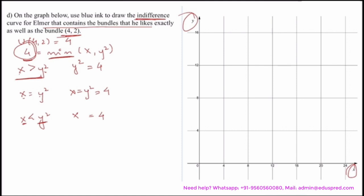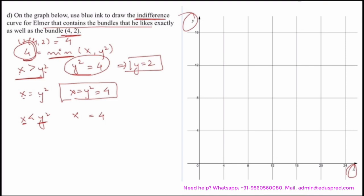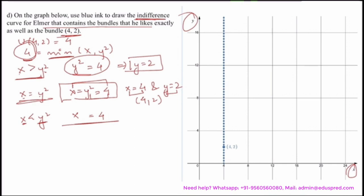Note a very important thing: you cannot just plot y squared equals 4 as a parabola. You have to simplify — y squared equals 4 gives y equals 2. And x equals y squared equals 4 gives the point x equals 4 and y equals 2. So from these equations, we get the key point (4, 2), the vertical line x equals 4, and the horizontal line y equals 2.